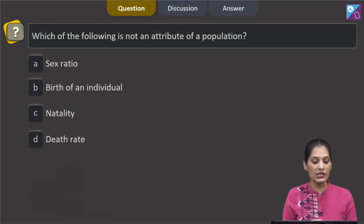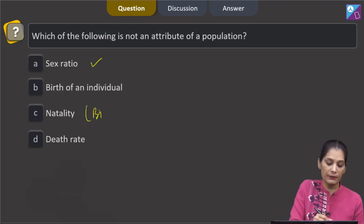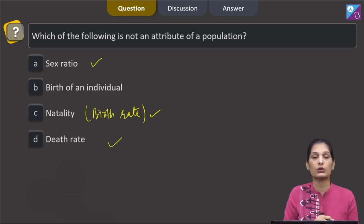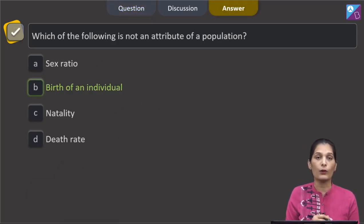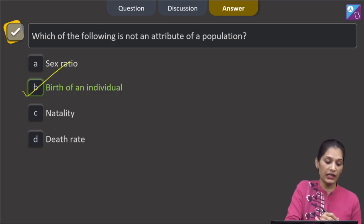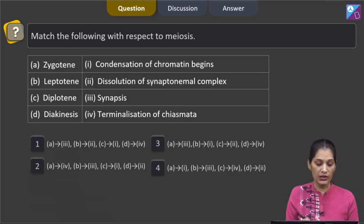This question says which of the following is not an attribute of a population? Sex ratio - it's an attribute of a population. Natality, it is the birth rate, so it is also the attribute of the population. Death rate is also an attribute of a population. Birth of an individual - birth of an individual is a specific trait for an individual. It is not the trait for a population. So the correct option for the given question is option B which is birth of an individual.